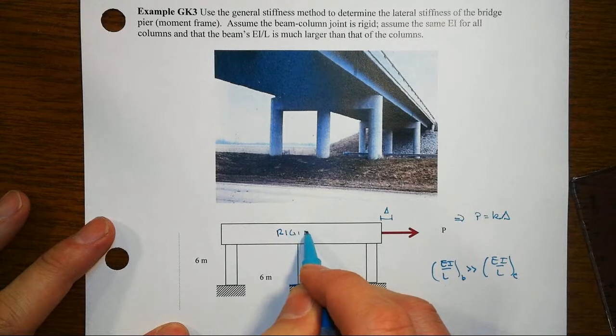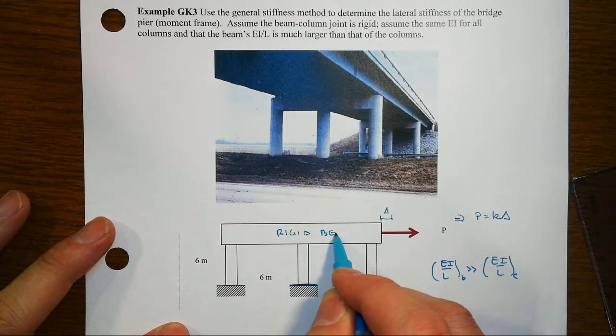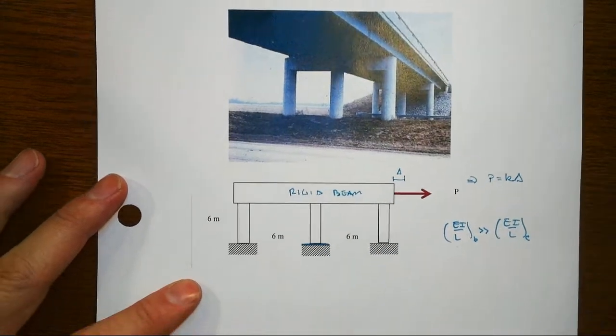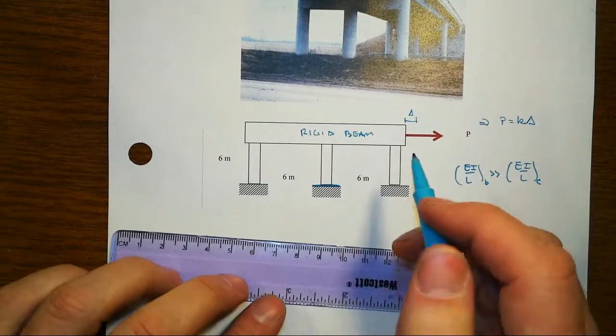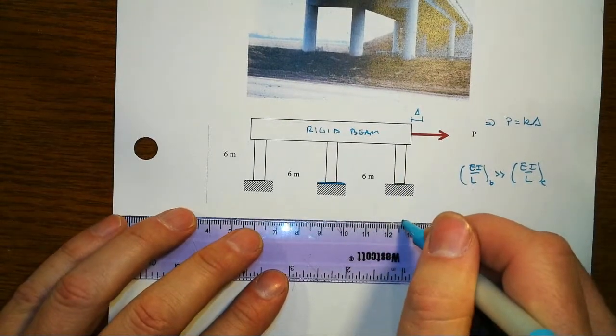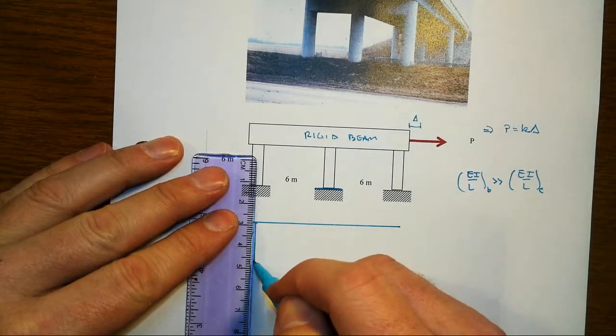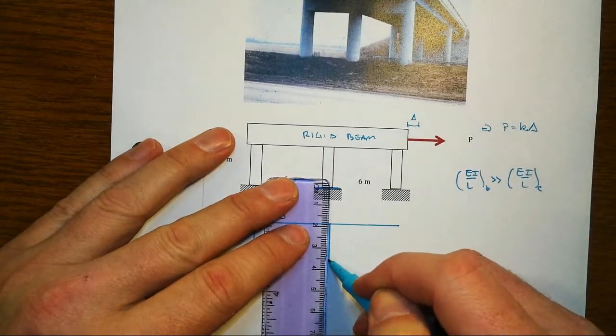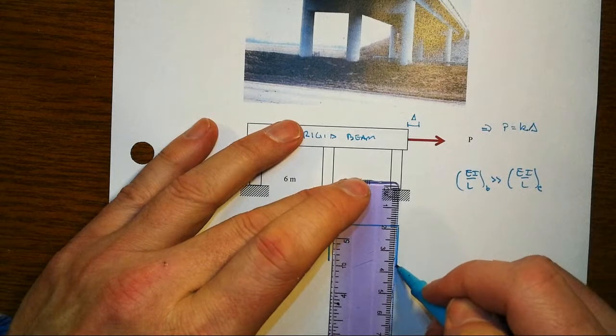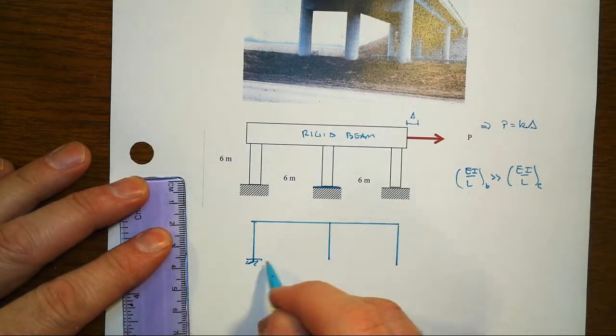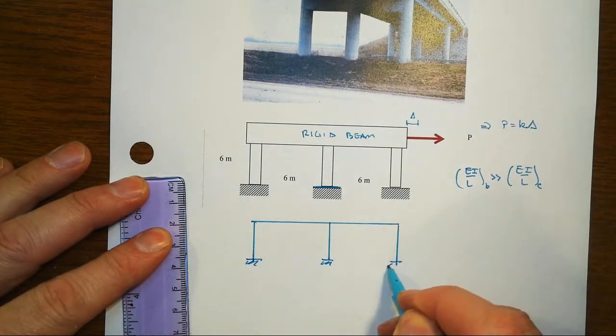Fixed foundation on each of the columns. And when this thing again moves over according to P, if the beam is rigid, when this thing moves over, being as thick and big and blocky as it is, it's not going to have hardly any rotations.